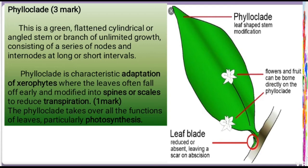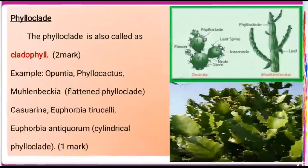Phyloclad is a leaf-shaped stem modification. To identify it as a stem, we look at the internode region where spines and scales are formed. In dry-habitat plants, the transpiration process is very rare, so water is conserved. Another important key point: phyloclad is otherwise called cladophyll — a very important exam question.